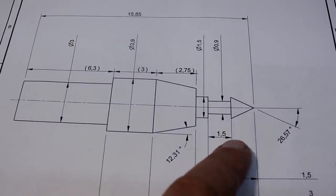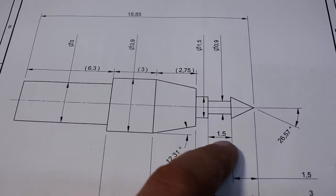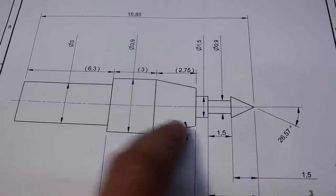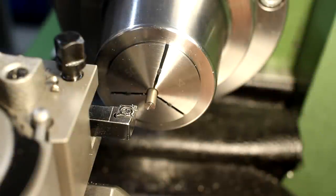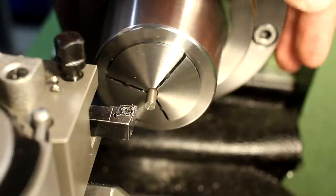So then we need a grooving tool, 1.5mm wide. I might have something that's matching here. And the rest is straight turning. Okay, get a piece of the Cantel wire in the spindle.